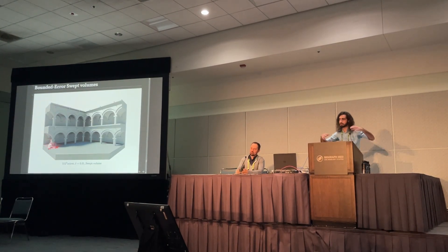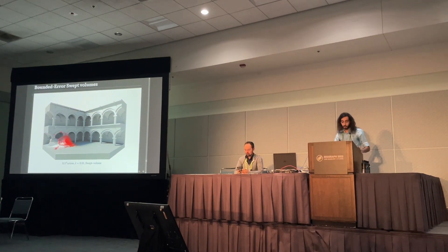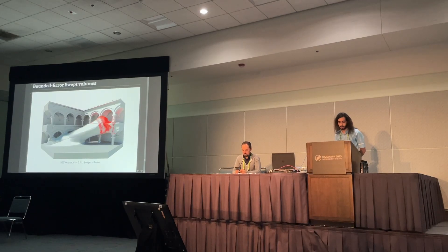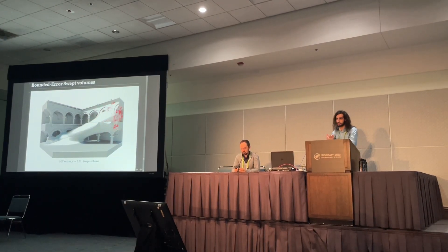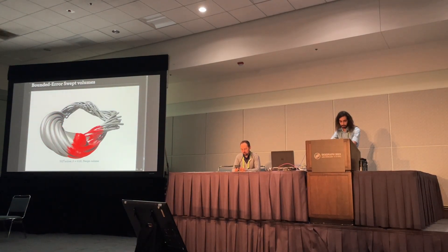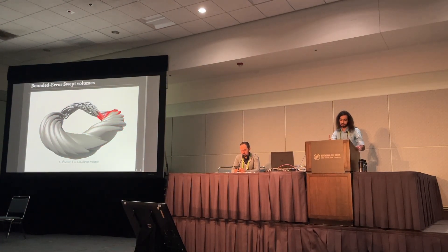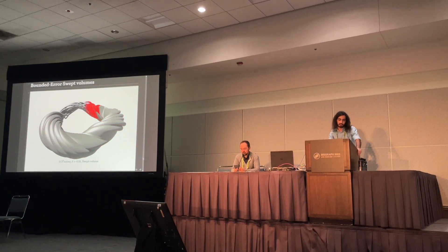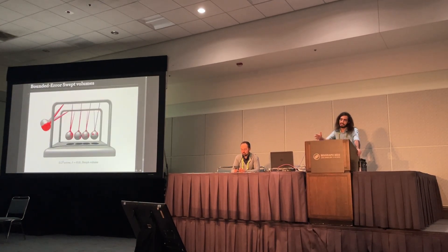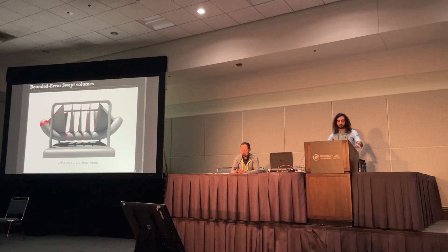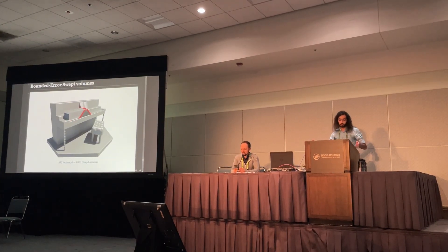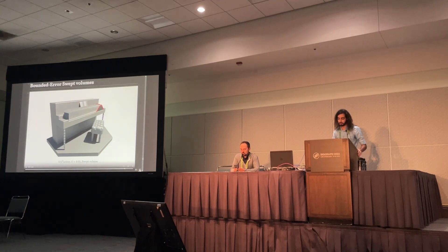Another cool extension we have is bounded error swept volumes, which are very fast because we're not re-evaluating the full scene and unioning it with itself every frame — we're just evaluating this moving frontier. To do this, it's a small tweak to the algorithm: you basically just disable voxel deallocations and some other stuff to keep it rigorous. And these are guaranteed to be hole-free and smooth.